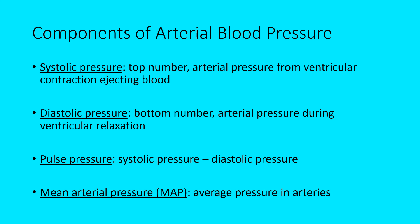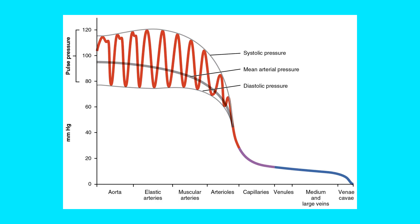When measuring pressure, systolic pressure is the top number and diastolic is the bottom number. Average blood pressure is typically around 120 over 80, sometimes 110 over 70. You can take those numbers and calculate pulse pressure or mean arterial pressure. As previously discussed, pressure is greatest in your arteries — the aorta has the highest blood pressure of any artery — and then it decreases, with veins having the lowest pressure.